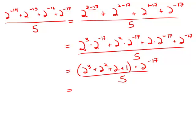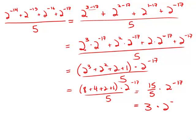Evaluating what we have in the parentheses: 8 plus 4 plus 2 plus 1 times 2 to the negative 17 divided by 5. This adds up to 15, so we get 15 over 5 times 2 to the negative 17, which is 3 times 2 to the negative 17. Answer choice C.